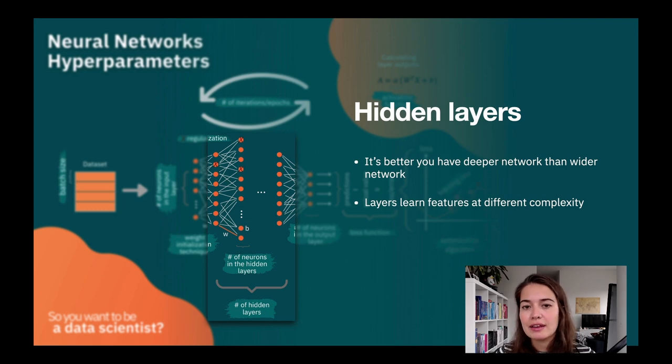This is because layers learn features from the data in varying complexity. One layer starts from higher complexity things—for example, it might see a tree. The next layer sees branches. The next layer sees details at the level of branches. As you go further, it might see leaves, or even the color and shape of the leaves.